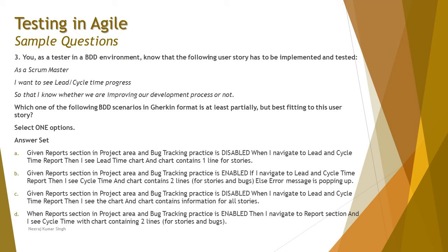Option A: Given reports section in project area and bug tracking practice is disabled, When I navigate to lead and cycle time project report, Then I see lead time chart and chart contains one line for stories. This fulfills the Given-When-Then Gherkin format requirements and it is disabled — that's why the scrum master isn't able to see. Option B: Given report section in project area and bug tracking practice is enabled — but it uses an 'else' statement, and Gherkin does not use the else statement as part of its syntax, so B is wrong.